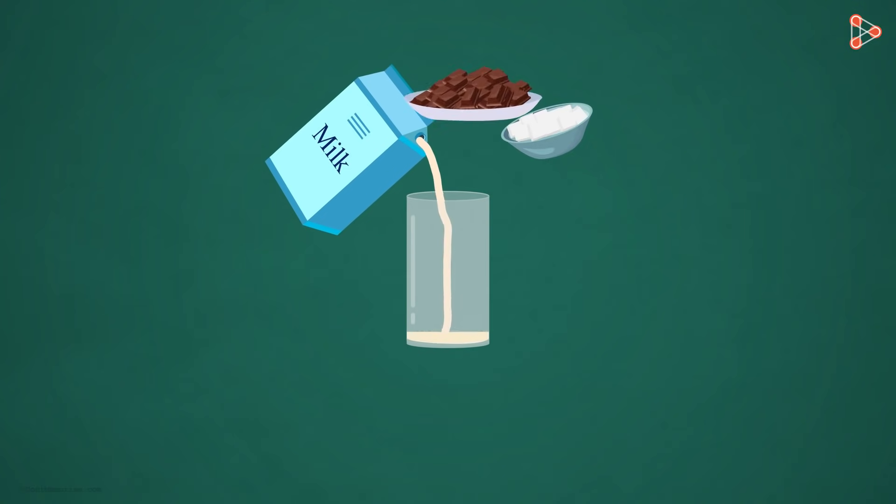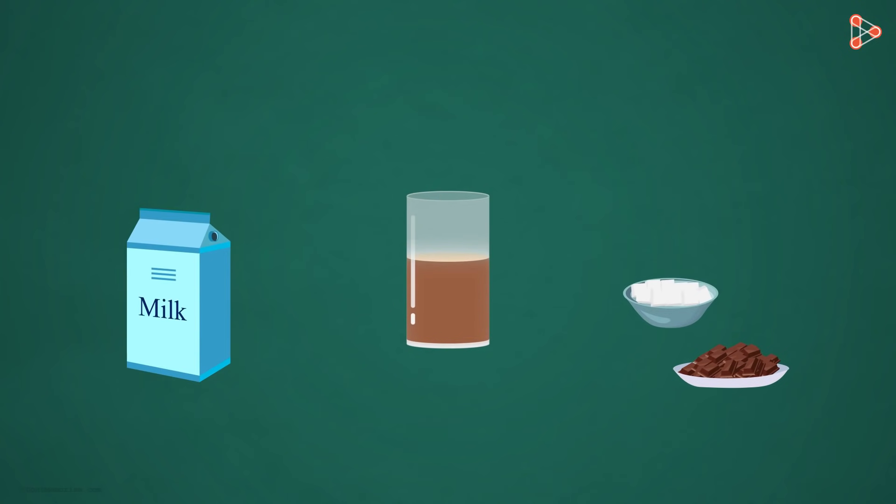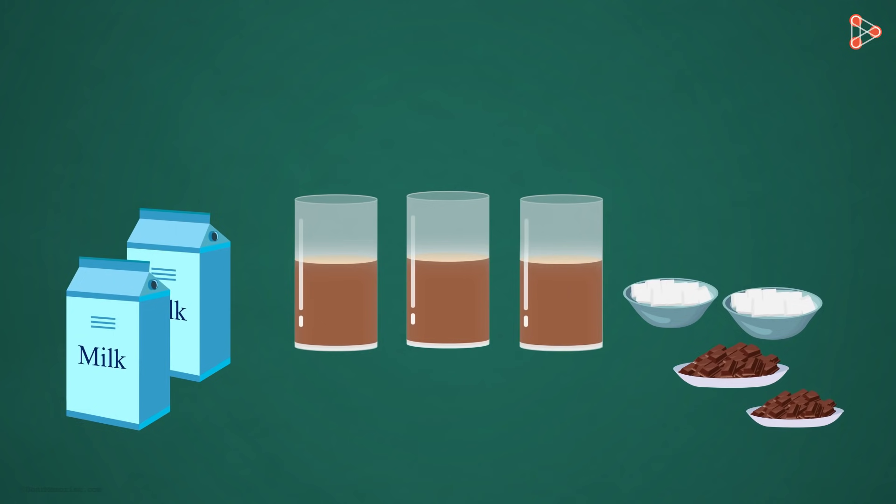Remember the example of chocolate milk that we considered while studying the first law? In that example, we saw that when we have to make double or triple the amount of chocolate milk, all we have to do is use the proportionate amount of the individual ingredients. Wait, did I say proportionate amount? What does that mean?